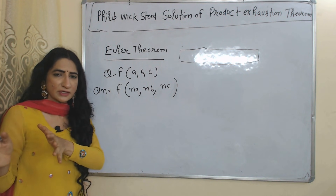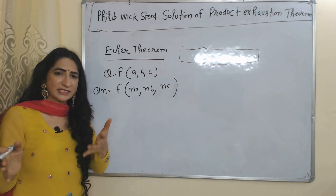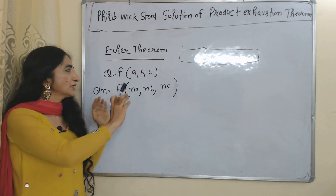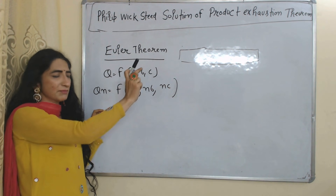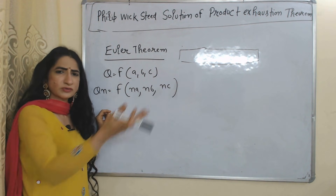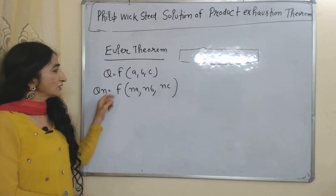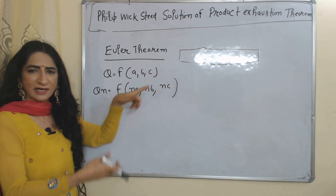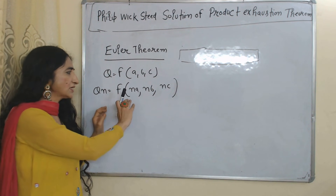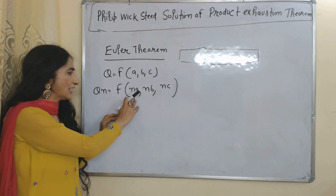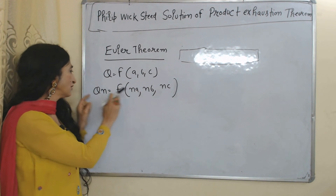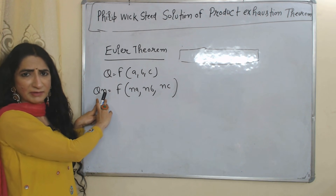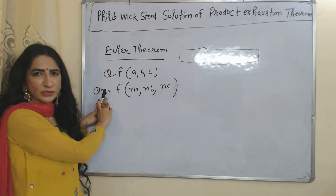Linear homogeneous production function means constant returns to scale. In the case of constant returns to scale, the change in output is the same as the change in input. If we increase all inputs by n, then our output will also increase by n. Here you can see Q is our output, A, B, C are our inputs. If we increase all inputs to nA, nB, and nC, our output will also increase by n, becoming equal to nQ.